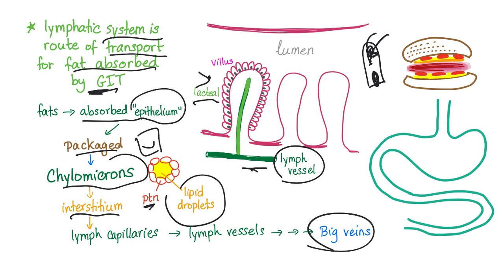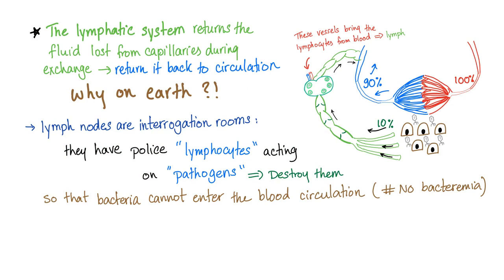Into the interstitium, then lymph capillaries, lymph vessels, and back to the circulation. The lymphatic system is a major route of transport for fat absorbed by the GI tract, and it returns the fluid lost from the capillaries back to the circulation.